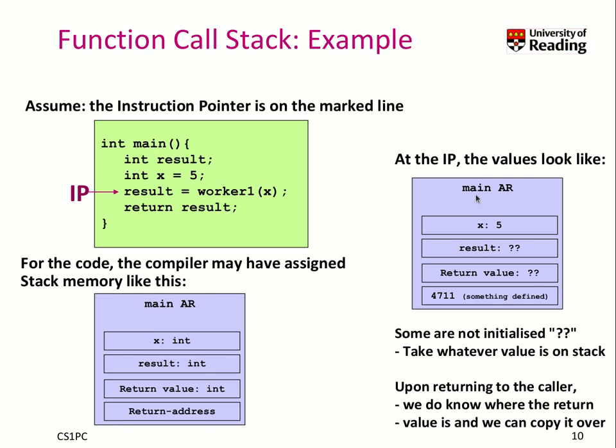And what needs to be stored in this activation record? We need to store local variables, so we have here the local variable x which was an integer with the value 5, so we need to have this stored. We also have this variable result, but this variable has not been initialized yet, it's not assigned anywhere, so it's unclear what it is.